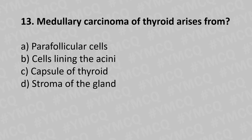Now let's move to question number thirteen. Medullary carcinoma of the thyroid arises from: option A - para-follicular cells, option B - cells lining the acini, option C - capsule of the thyroid, option D - stroma of the gland.